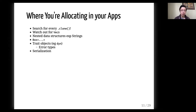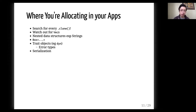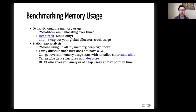Where could you be allocating memory in your apps? We'll go over each of these items in detail. One area that could take up a lot of memory is serialization, which creates a lot of temporary objects. Another is when you use traits or trait objects. And any time you use clone, data structures, and so forth. You could look at your app and go through and find these uses, but maybe a better way is to benchmark.